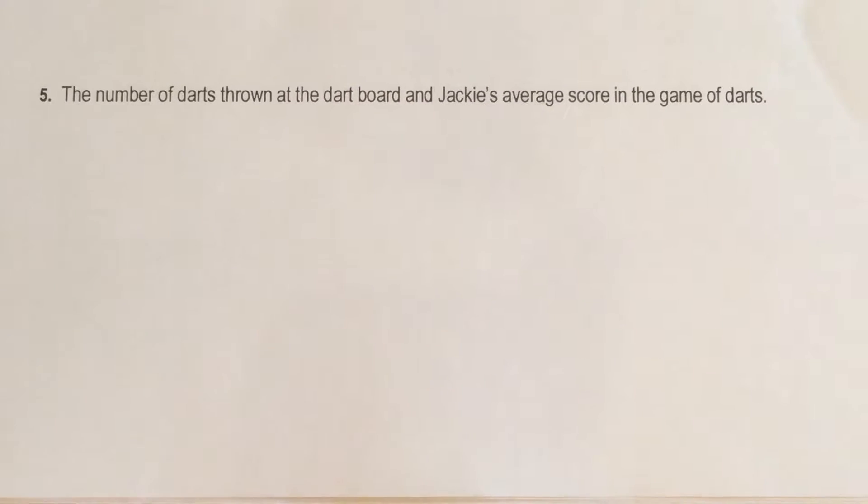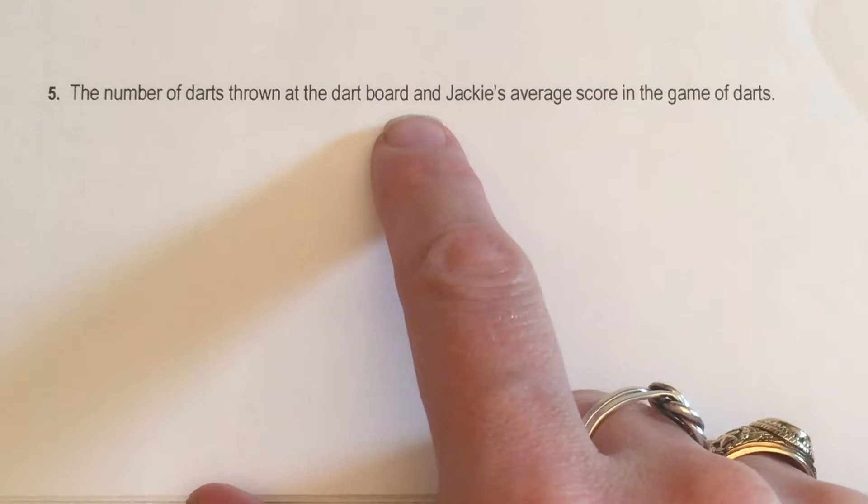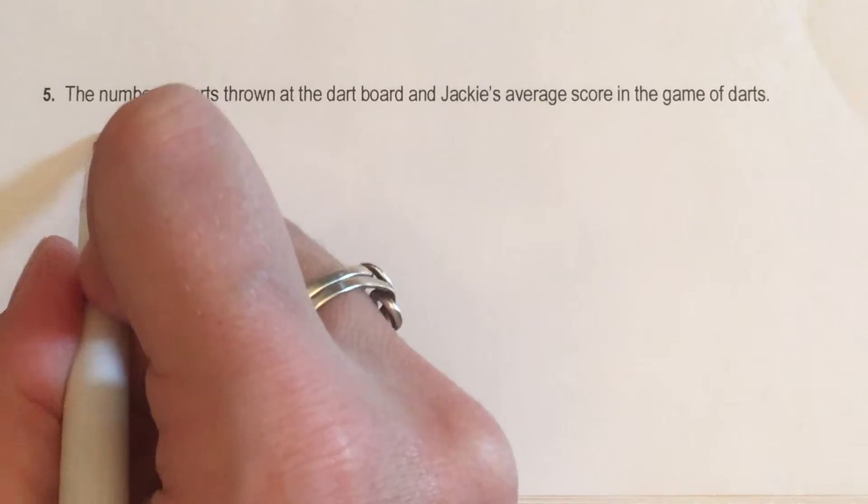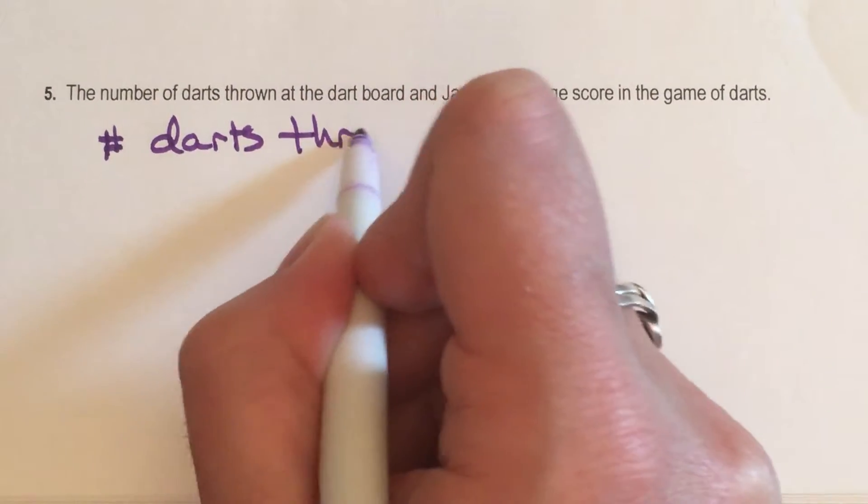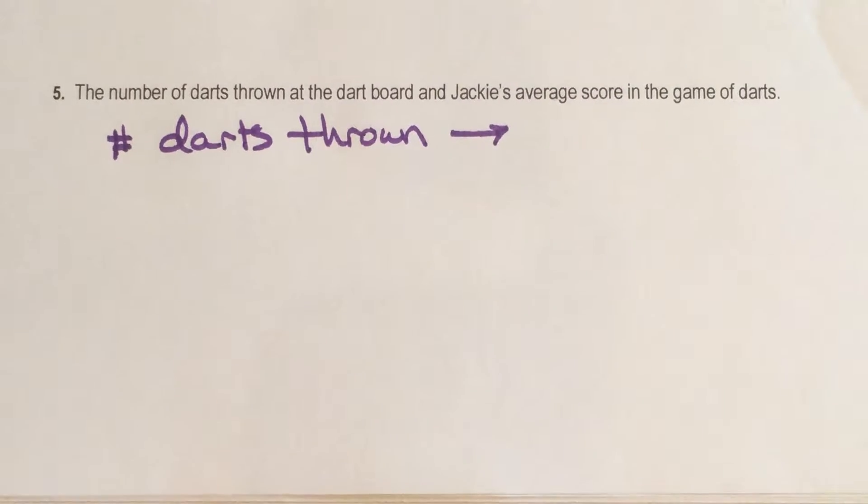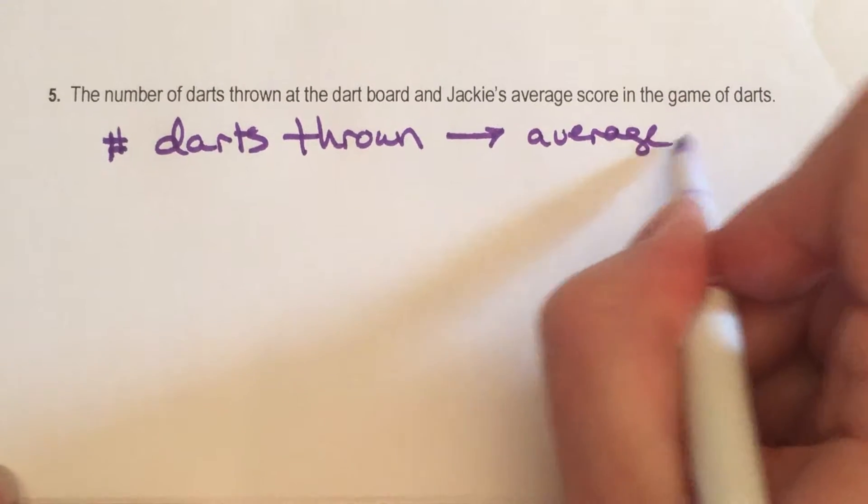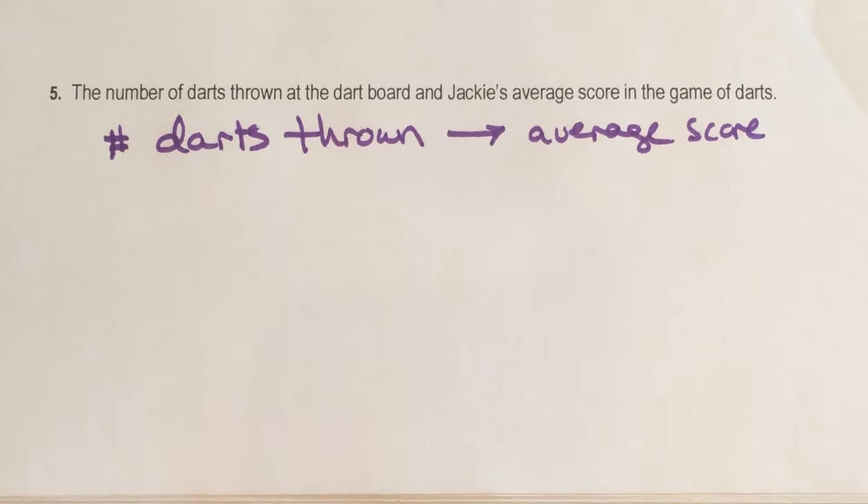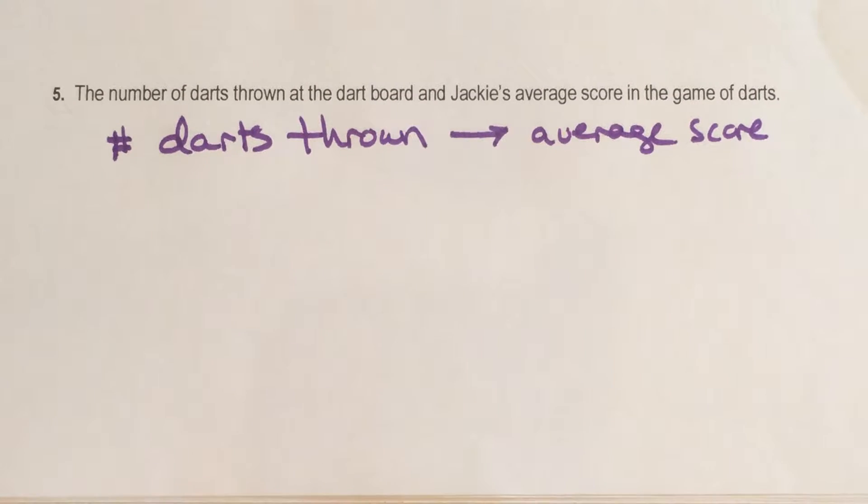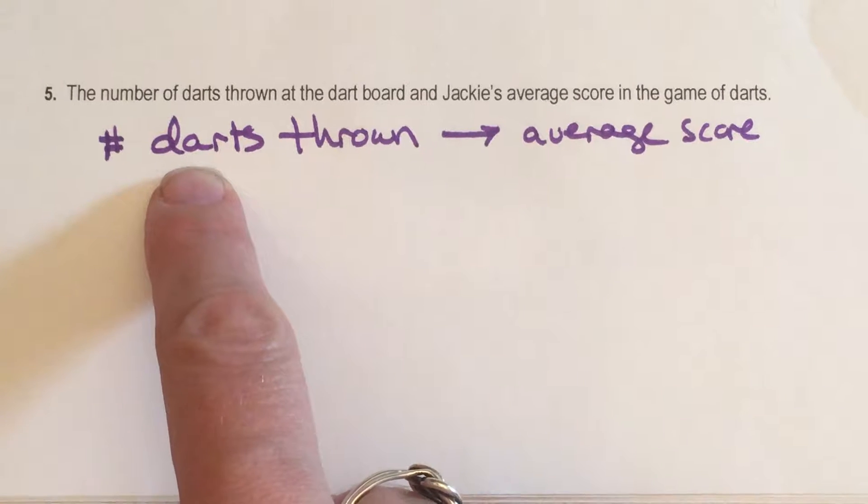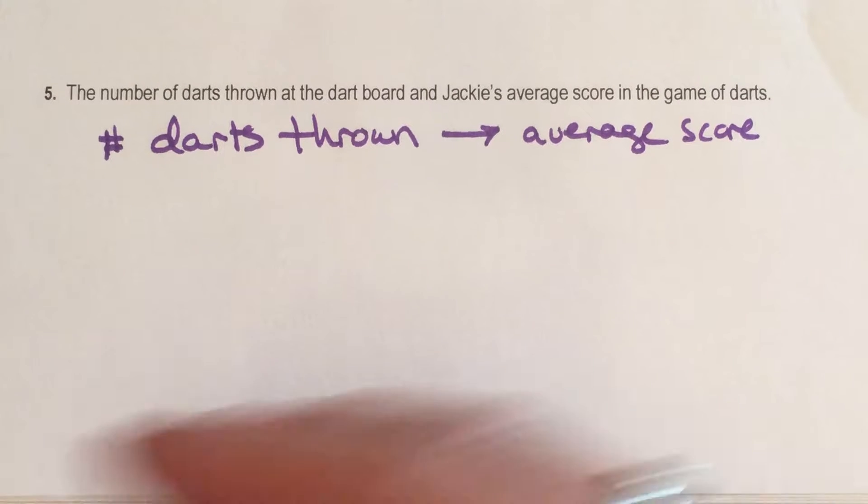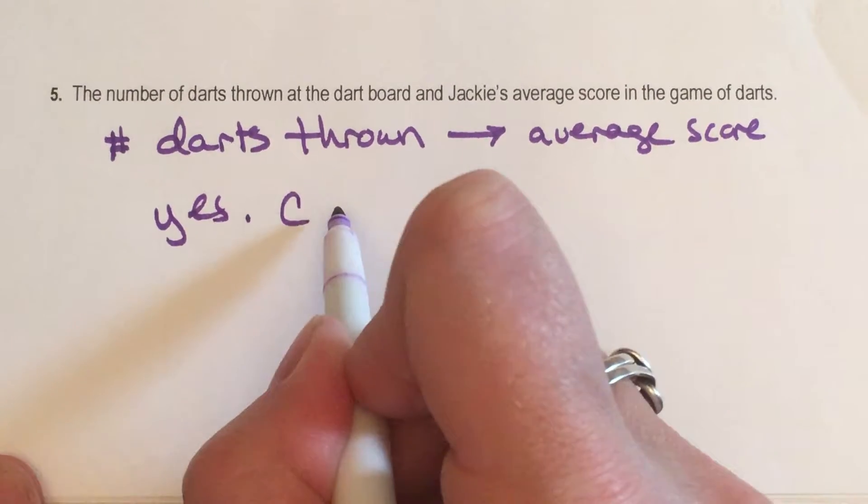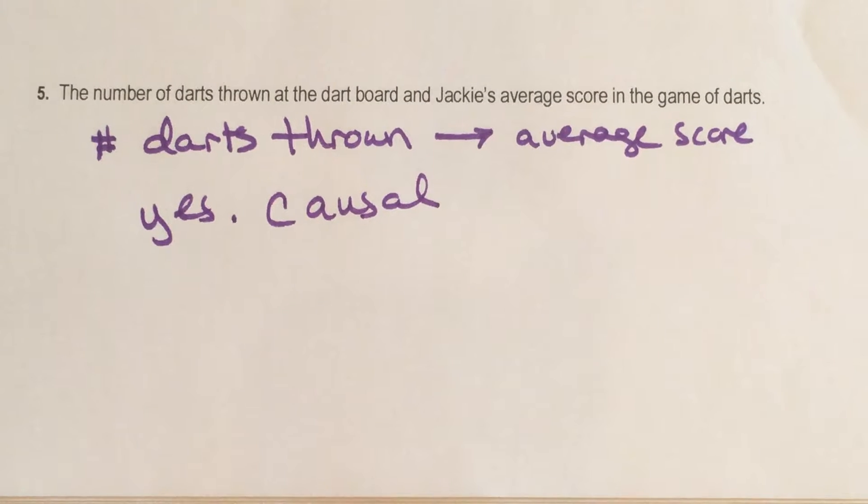All right. The second example. This is problem number five on your paper. The number of darts thrown at the dartboard and Jackie's average score in the dart game. So let's see. The number of darts, does that have a cause and effect relationship with the average score? Well, how do you build an average? Let's think. You add up all of the numbers and then you divide by the number of times you did the thing. So the number of darts thrown, that's the number of times you did the thing, right? And when you throw a dart, it lands and gets a score. So yes, there is a very direct cause and effect relationship there. Great. Causal.